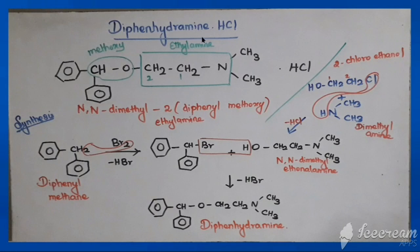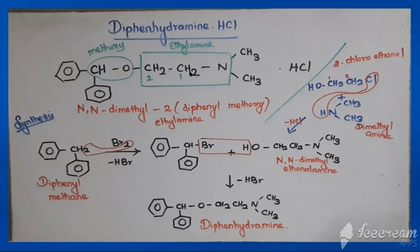This is the third class of antihistamines. We are going to see some important antihistaminic agents. The first one is diphenhydramine hydrochloride, available in hydrochloride form. From the name itself, 'diphen' indicates two phenyl rings. For the structure, the parent moiety is ethylamine (CH3-CH2-NH2). The second carbon of ethylamine is connected with a methoxy group, and the carbon of that methoxy group carries two phenyl rings.